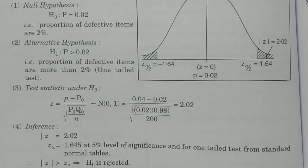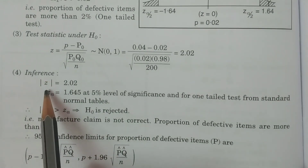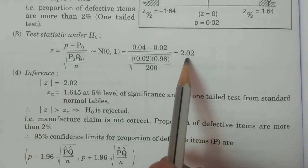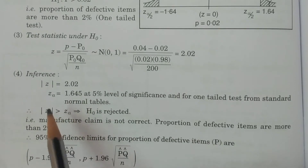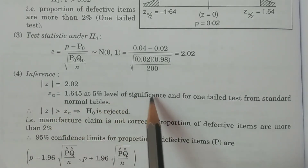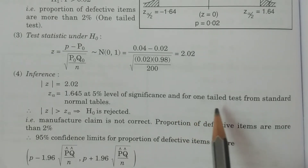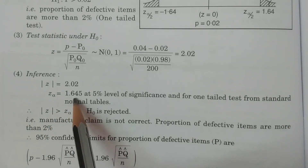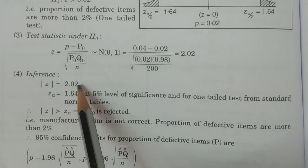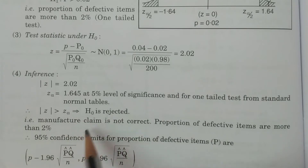After calculating Z, we proceed to comparison and conclusion. The modulus of Z is 2.02. For Z alpha at 5% level of significance for a one-tailed test, from the standard normal tables, Z alpha equals 1.645. Since modulus of Z (2.02) is greater than Z alpha (1.645), H₀ is rejected.